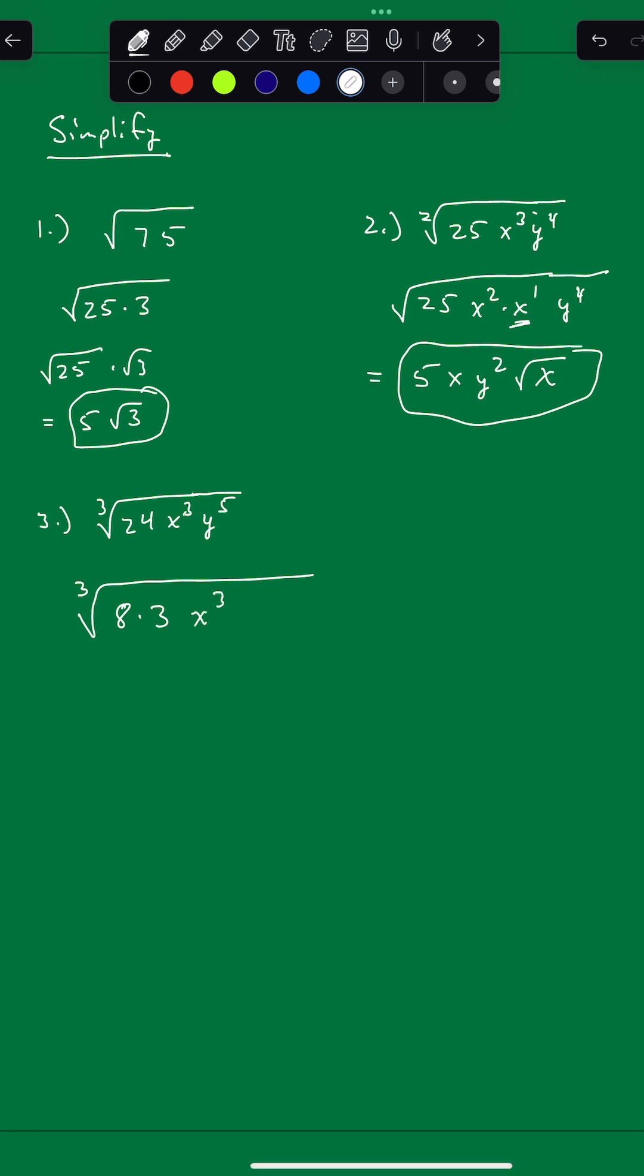3 does not go into 5 evenly. But y to the 5th does have a perfect cube. We can write y to the 5th as y cubed times y squared.